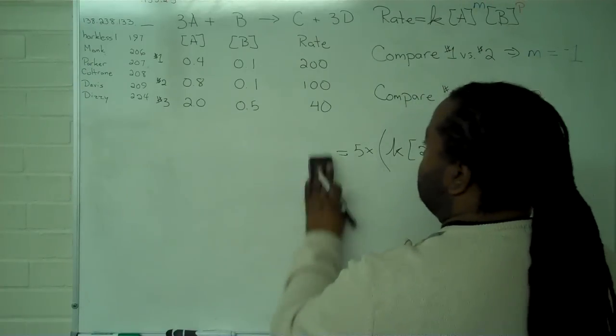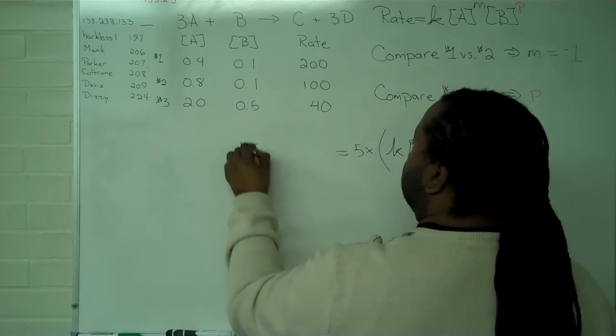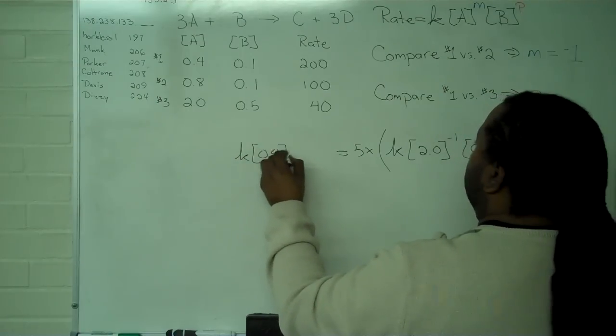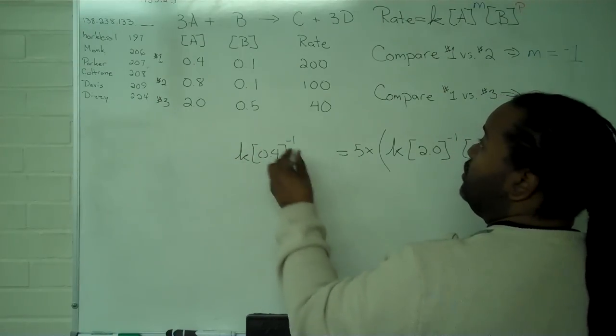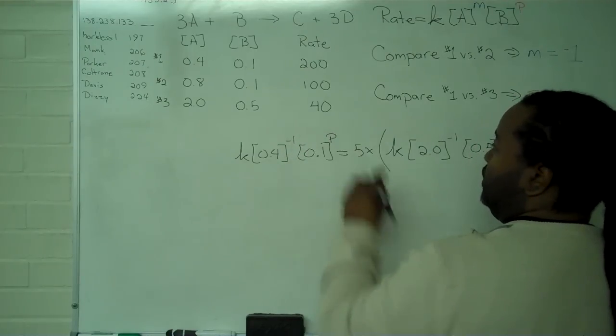We make the same substitution for rate 1. We have the rate constant, the concentration of A for trial 1, 0.4, raised to the negative 1, and the concentration of B, which is 0.1, raised to the P.